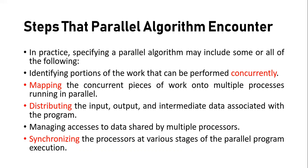The tasks might be independent and not depend on other tasks, which is why we execute them concurrently. After that, we distribute the input, output, and intermediate data associated with the program. Next, managing the access of data shared by multiple processes. After mapping and distributing data, we synchronize the different parallel processes so that we can perform the task at one time.